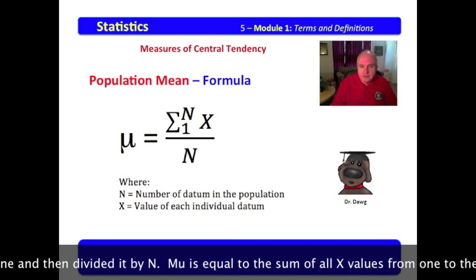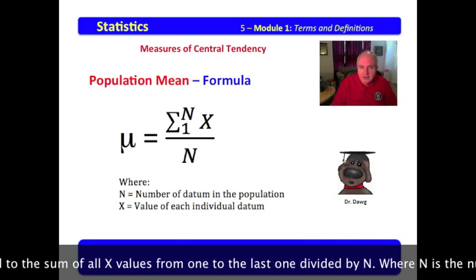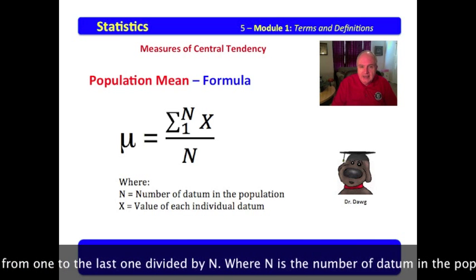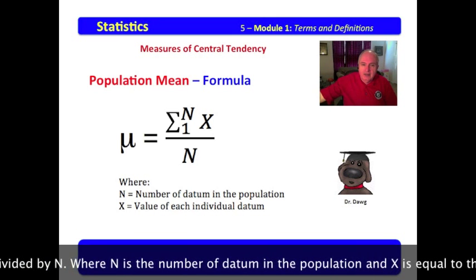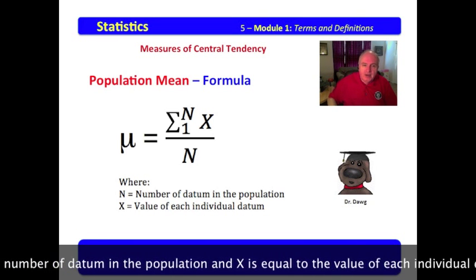Mu is equal to the sum of all X values from one to the last one, divided by N, where N is the number of datum in the population.